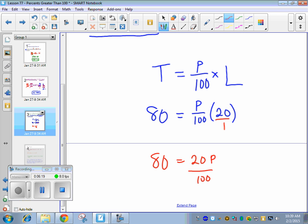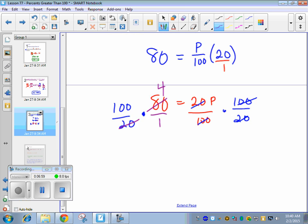You can reduce here if you want, or go ahead and do reciprocal and then reduce. I'm going to do reciprocal first. So to get P by itself, we're going to multiply by 100 over 20 so that we can cancel. And same thing on this side, 100 over 20. And then we would multiply here. And we get 400.